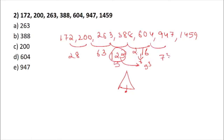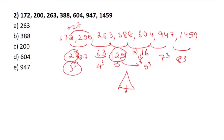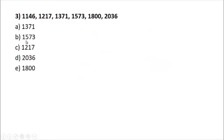So the pattern of differences is cubes: 3³, 4³, 5³, 6³, 7³, 8³. Working back, the second difference should be 4³ = 64, and the first difference should be 3³ = 27. So 172 plus 27 equals 199, meaning the correct value should be 199, but we have 200. The answer is option C - 200 is the wrong number.